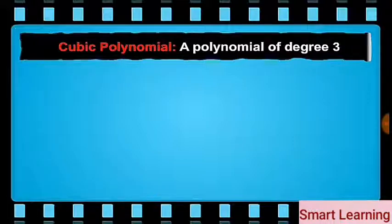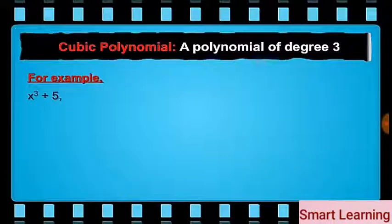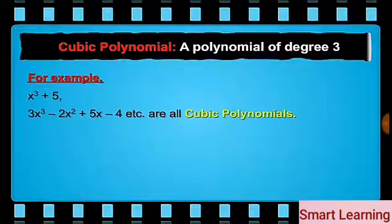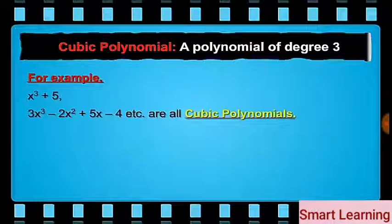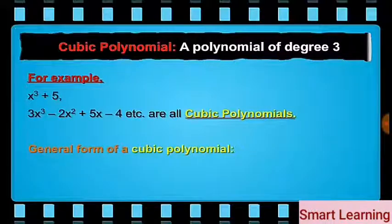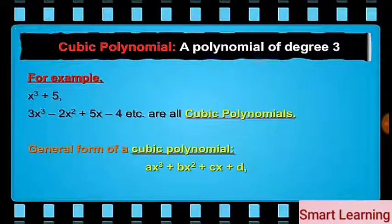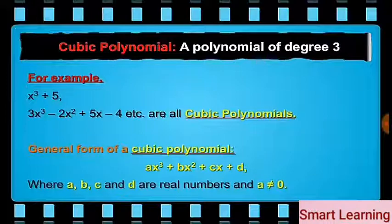A polynomial of degree 3 is called a cubic polynomial. For example, x cubed plus 5, and 3x cubed minus 2x squared plus 5x minus 4, etc. are all cubic polynomials. In general, the most general form of a cubic polynomial is ax cubed plus bx squared plus cx plus d, where a, b, c, d are real numbers and a is not equal to 0.